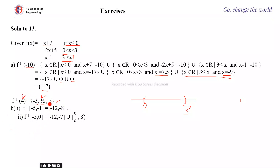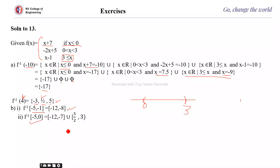Likewise, you can verify your answers are correct when working with piecewise functions. For f⁻¹([-5, -1]): substitute the range into each piece — -5 ≤ x + 7 ≤ -1 for the first case, and similarly for the other pieces — to find the corresponding x ranges and take the union.